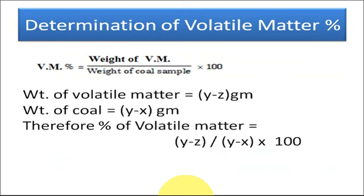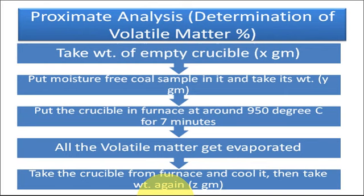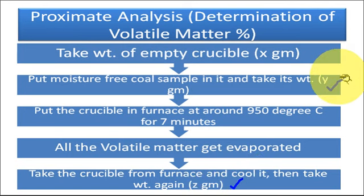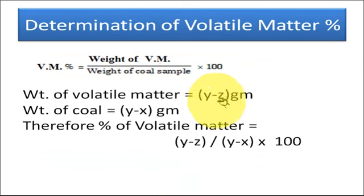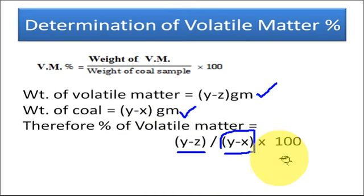The percentage of volatile matter is equal to weight of volatile matter divided by weight of coal sample multiplied by 100. The weight of volatile matter is Y minus Z — since Y is the weight of crucible plus moisture-free coal, and Z is the weight of crucible plus volatile-matter-free coal, so the difference is only the volatile matter. The weight of coal is Y minus X. Therefore, the percentage of volatile matter = (Y − Z) / (Y − X) × 100.